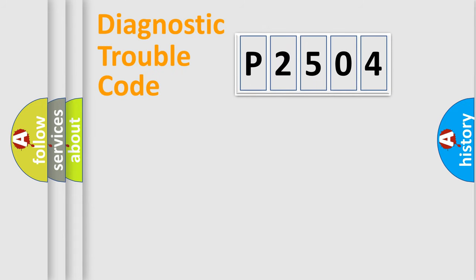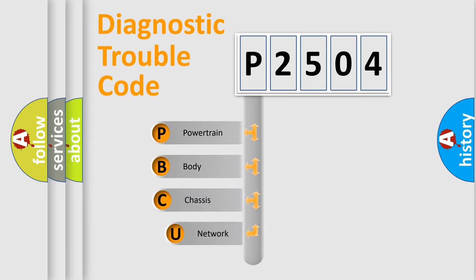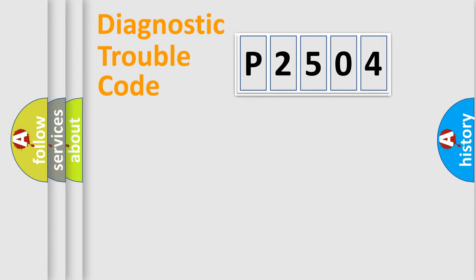Let's do this. First, let's look at the history of diagnostic fault code composition according to the OBD2 protocol, which is unified for all automakers since 2000. We divide the electric system of the automobile into four basic units: Powertrain, Body, Chassis, and Network.